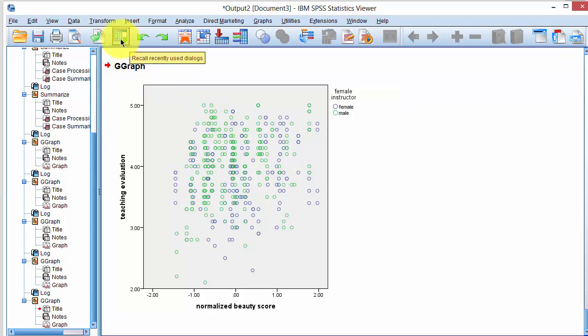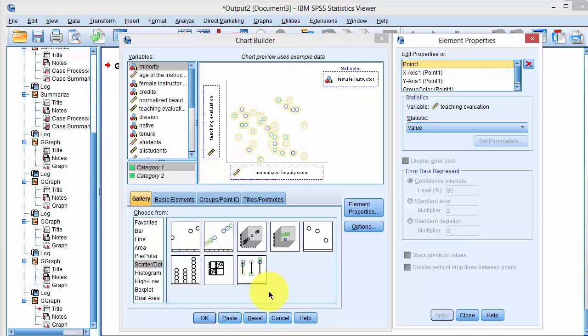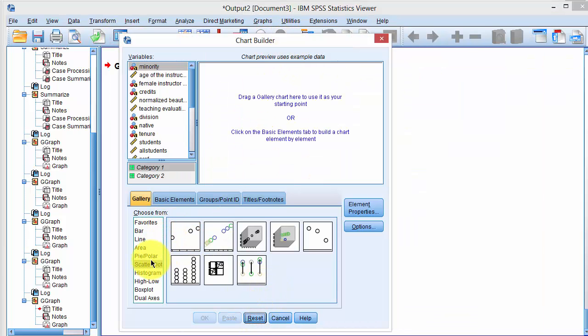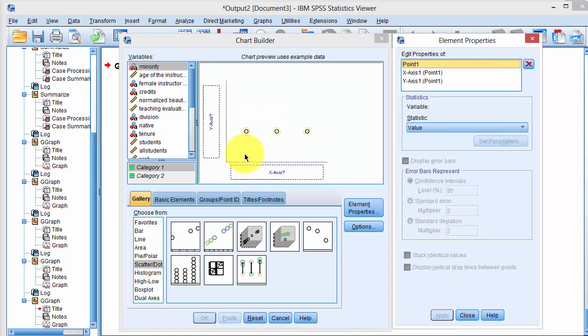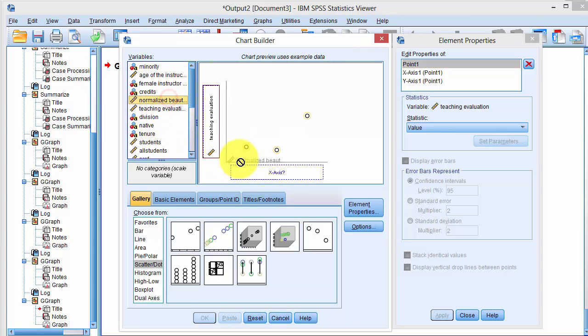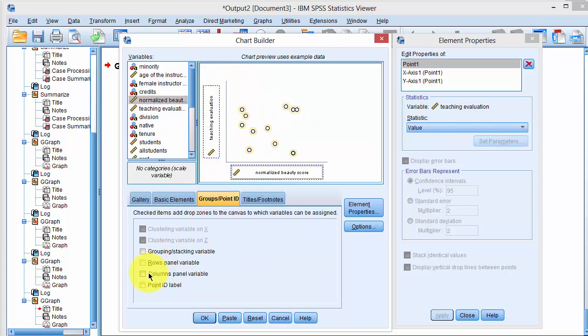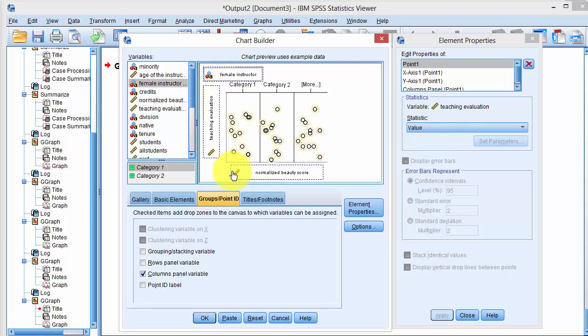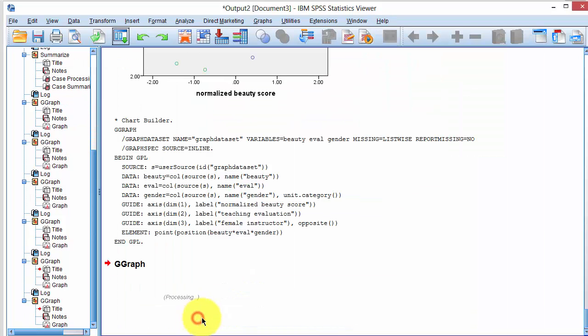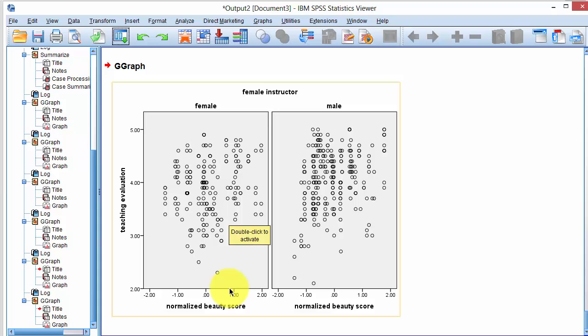In order to do multiple panels, we recall the same dialog box, reset, and say scatter, pick the appropriate template, drop teaching evaluation score on y-axis, drag normalized beauty score on x-axis. So this is the same graph as before, but now we say groups and select the column panel variable, and it shows up here, and now we say female instructor variable here. So now we will have multiple side-by-side panels. Click on OK, and here you go.